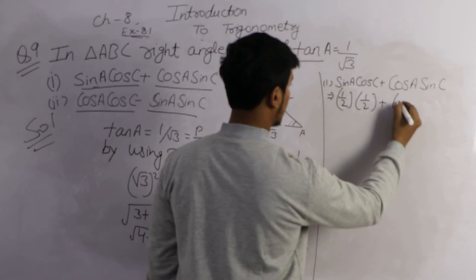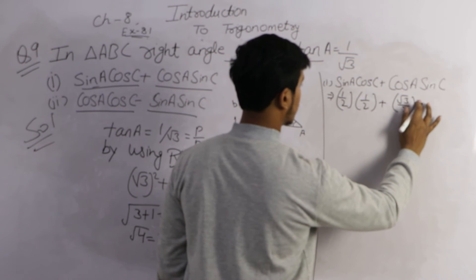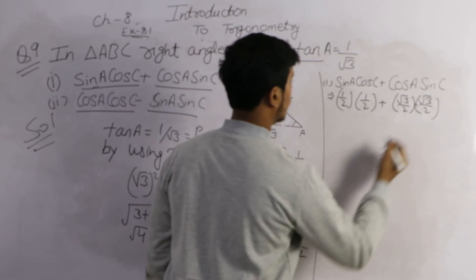The value of cos A is root 3 by 2 and the value of sin C is root 3 by 2.